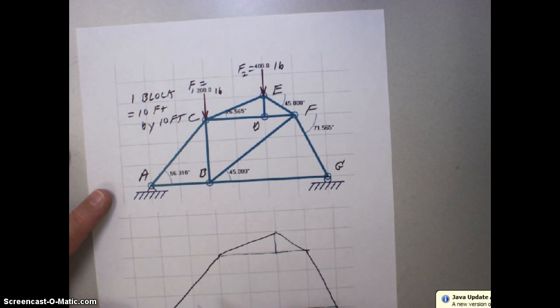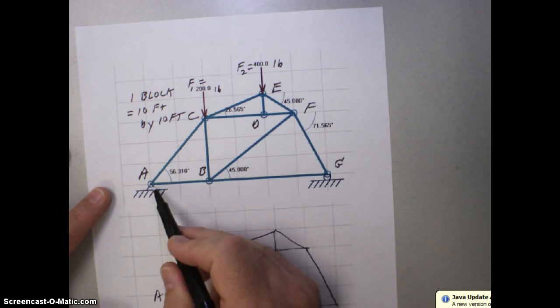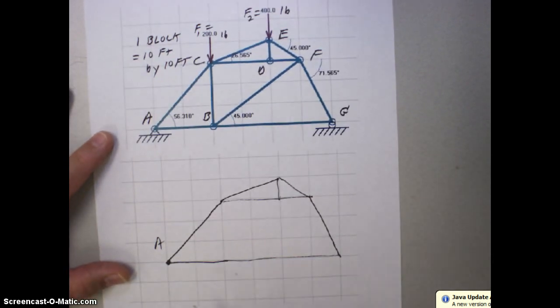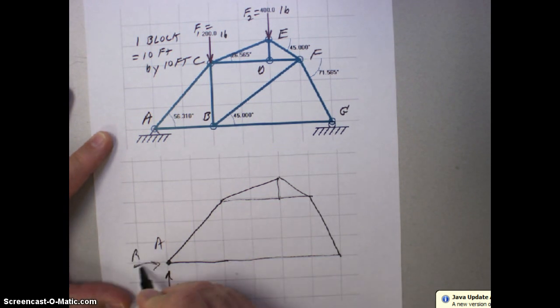Each block is worth 10 feet. So here at A, I've got a reaction force. Because it was a pin, I'm going to have two forces. I'm going to have an RAY and I'm going to have an RAX. This is point B.